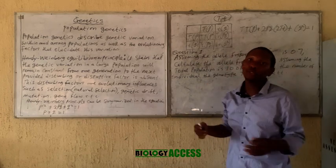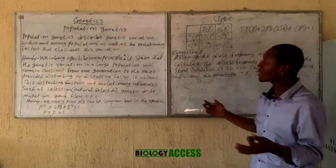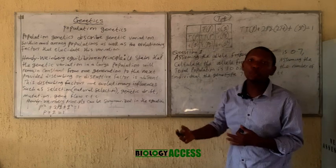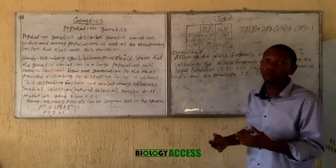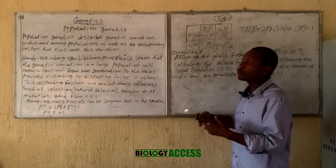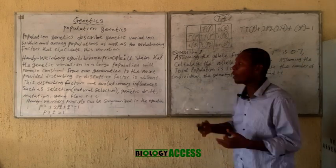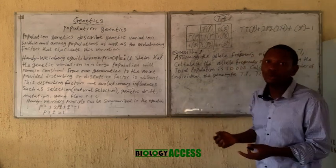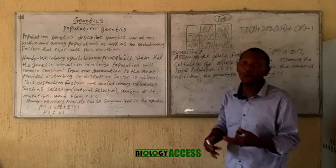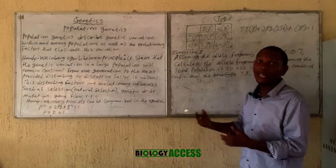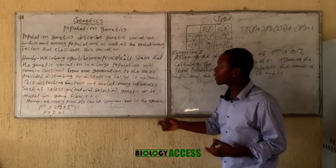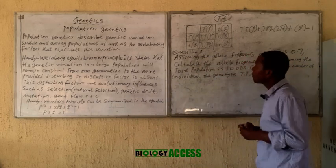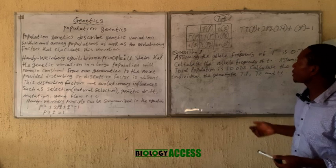This principle is applied when calculating or predicting the number of individuals in a population that have a particular genotype or allele frequency. Today is an introductory class; in subsequent videos I will post a detailed explanation of the application of the Hardy-Weinberg principle as well as the evolutionary factors that can affect genetic variation in a population.